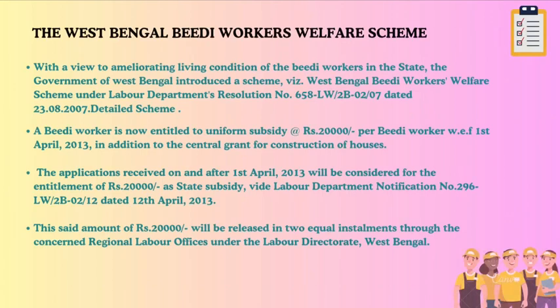The West Bengal BD Workers Welfare Scheme was introduced by the Government of West Bengal under Labor Department's Resolution No. 658-LW/2B/02/07 dated 23rd August 2007, to ameliorate the living conditions of BD workers. A BD worker is entitled to a uniform subsidy of Rs. 2,000 per worker with effect from 1st April 2013. In addition, for applications received on or after 1st April 2013, an estate subsidy of 20,000 rupees per worker is available in addition to the central grant for construction of houses, released in two equal installments through the concerned Regional Labor Offices under the Labor Directorate, West Bengal.